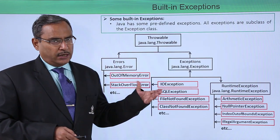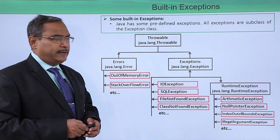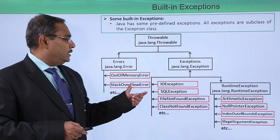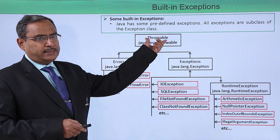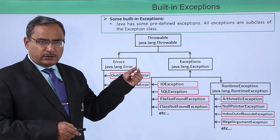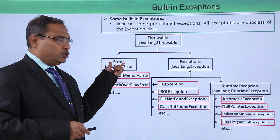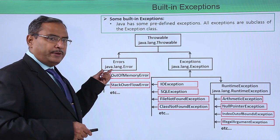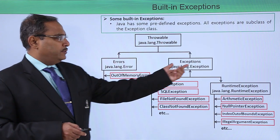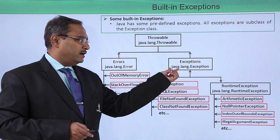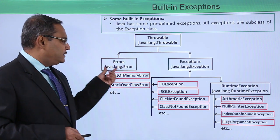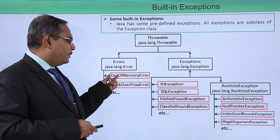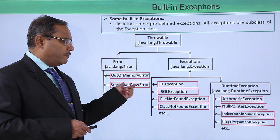Java has some predefined exceptions and all exceptions are subclasses of the exception class. Throwable is a class having the package Java.lang. Java.lang.Throwable has two subclasses: one is errors, having the class Java.lang.Error, and another one is exceptions, having the class Java.lang.Exception. Under the Java.lang.Error class, we have multiple subclasses such as OutOfMemoryError, StackOverflowError, etc.